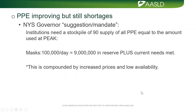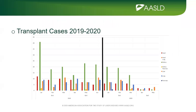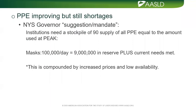PPE is improving but there are still shortages nationwide. New York State is suggesting or mandating that institutions maintain a 90-day stockpile of all PPE equal to what was used at peak. For our system, at peak we were using 100,000 surgical masks per day, meaning we need 9 million in reserve plus current needs. Compounded by increased prices and low availability — we went from paying cents to dollars per mask — this is a significant cost increase and a challenge we must strive to meet to be prepared for future emergencies.